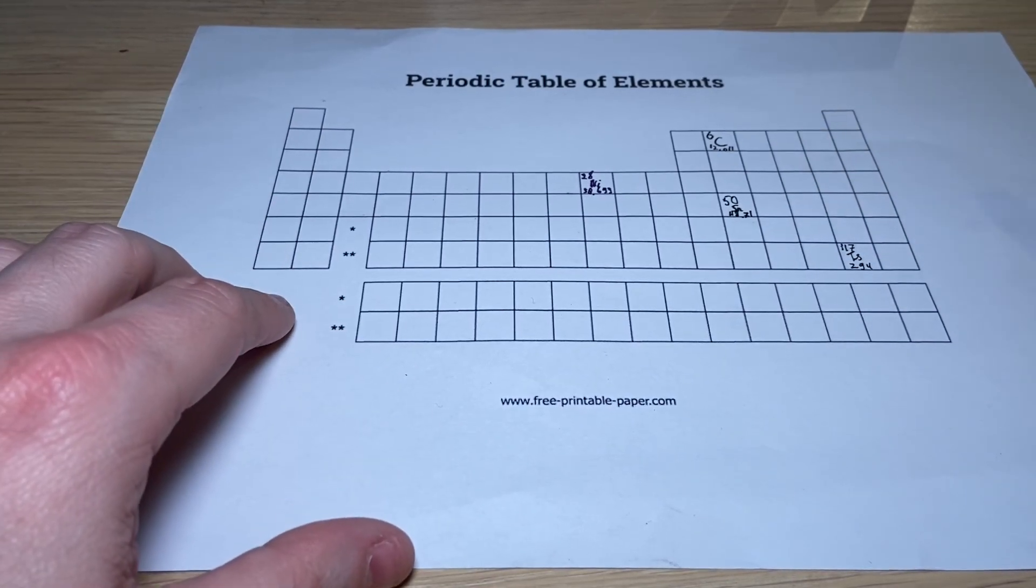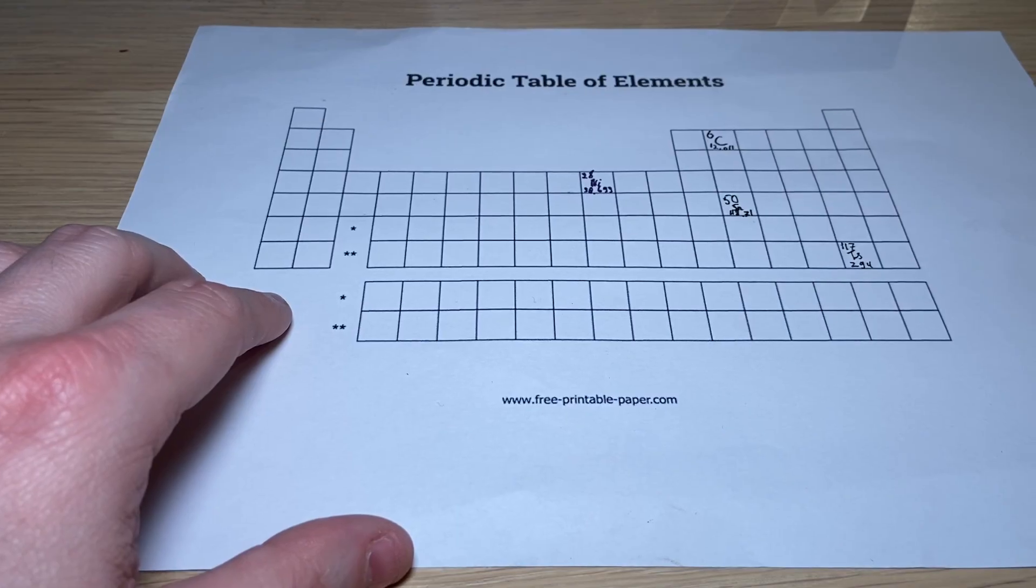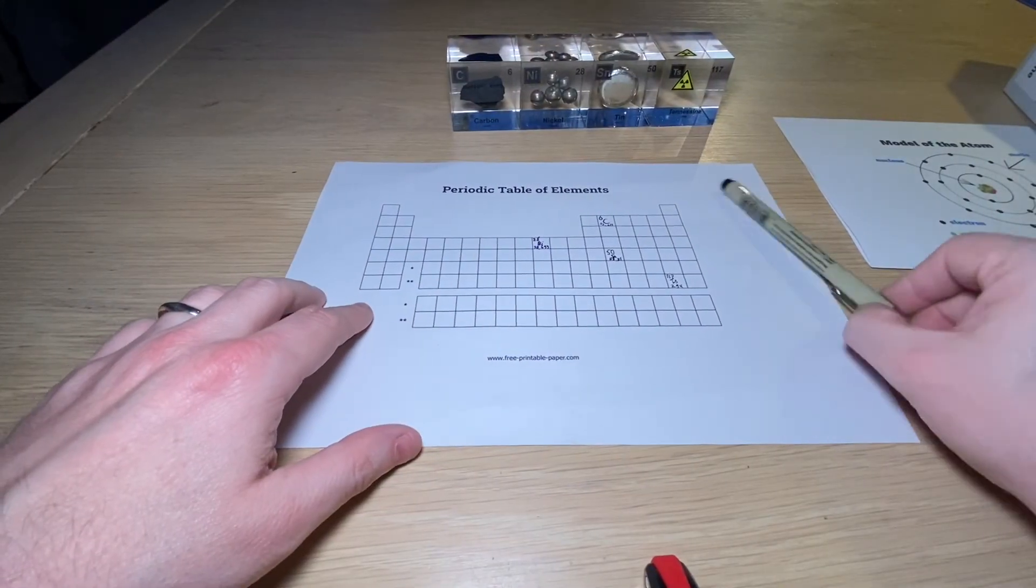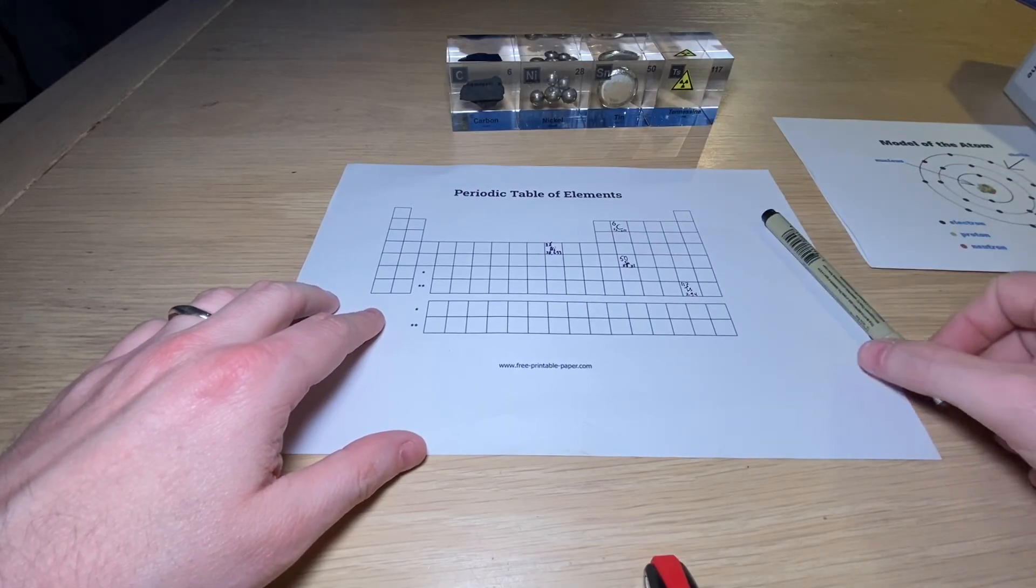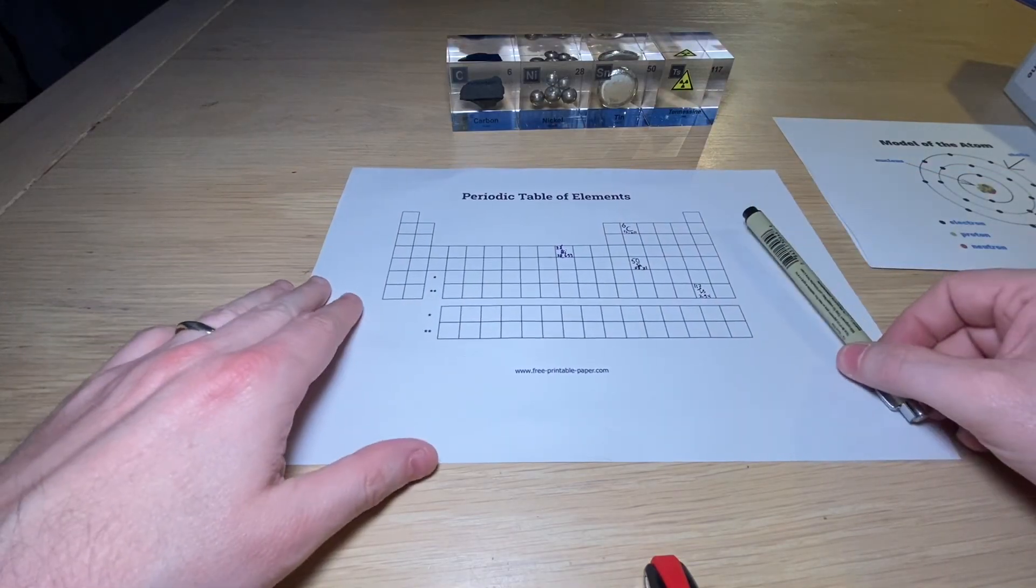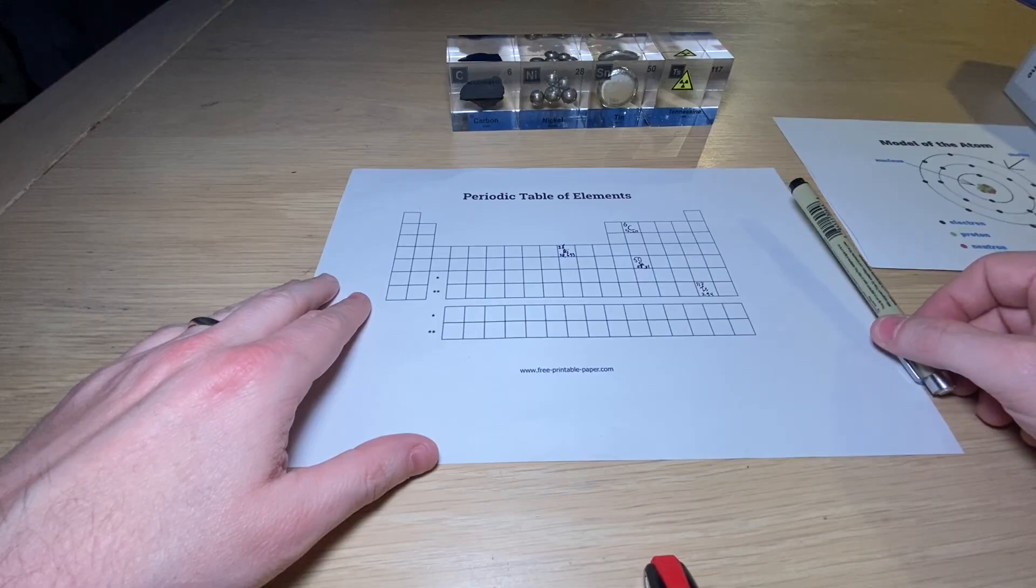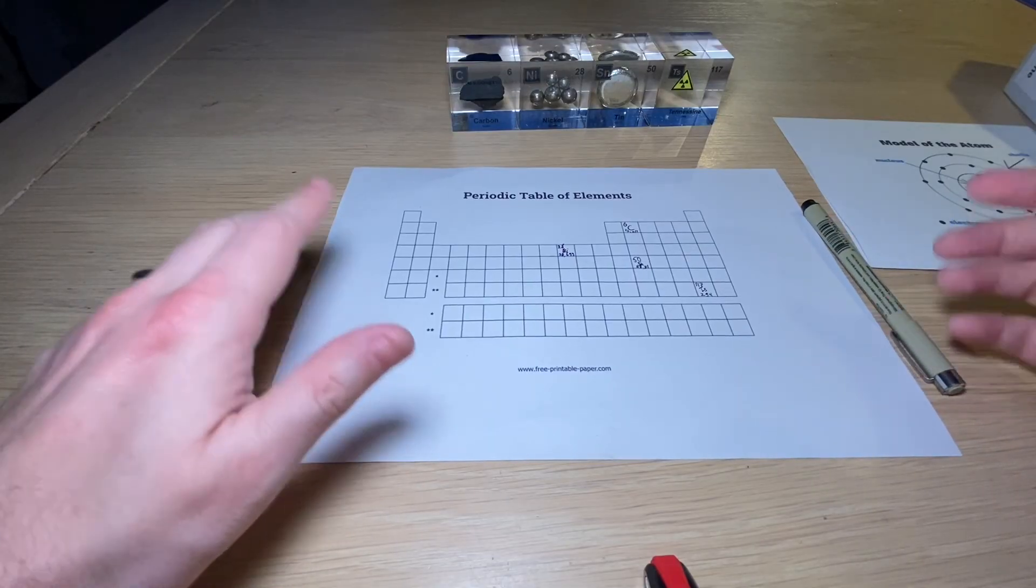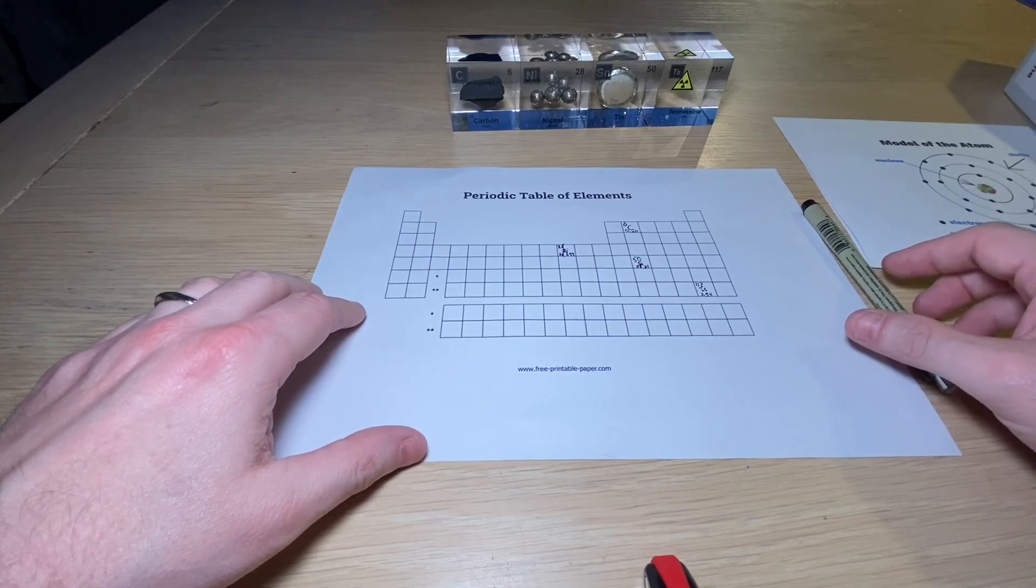That was basically the extra story that I wanted to tell today because there was not much to tell about that lovely element of Tennessine. However, it is an element in the periodic system. Hope you enjoyed the episode. If you have questions, by all means, ask them in the comments. Subscribe if you like, and see you next week.